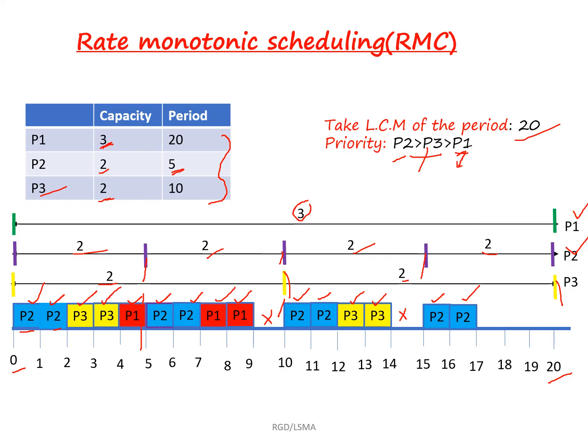The P1 process execution is over, the P3 process execution is over, and at time 17 the P2 process execution is also over. So in the rate monotonic scheduling algorithm, all three processes are allocated in the scheduling process and they complete execution at the time period of 17 — not actually 20. All three processes are scheduled in this manner and complete by the scheduling time of 17. This is called the rate monotonic scheduling algorithm. Thank you for watching.